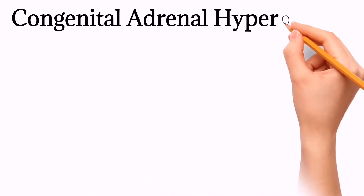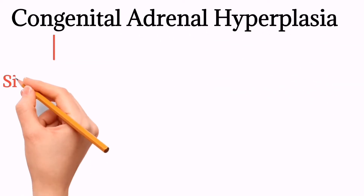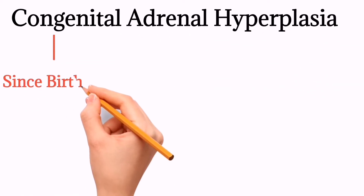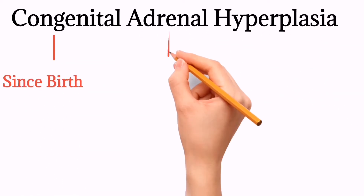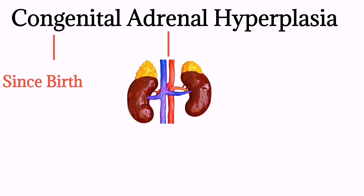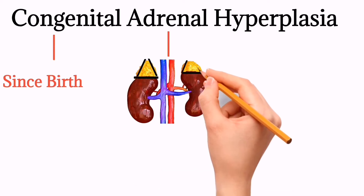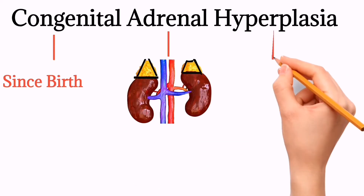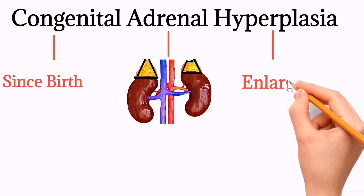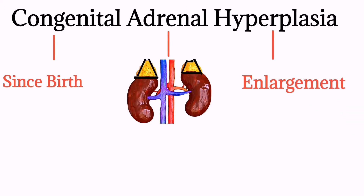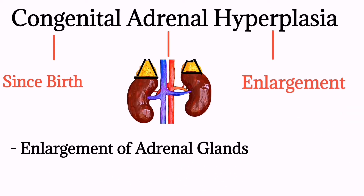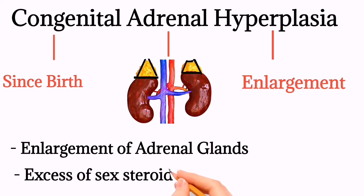The name indicates: congenital means it is present since birth; adrenal refers to our two glands sitting on top of our two kidneys; and hyperplasia means enlargement. So congenital adrenal hyperplasia presents with enlargement of the adrenal gland and excess of sex steroid hormones.